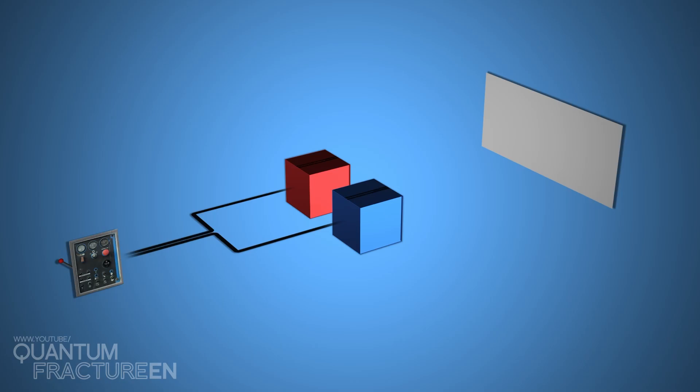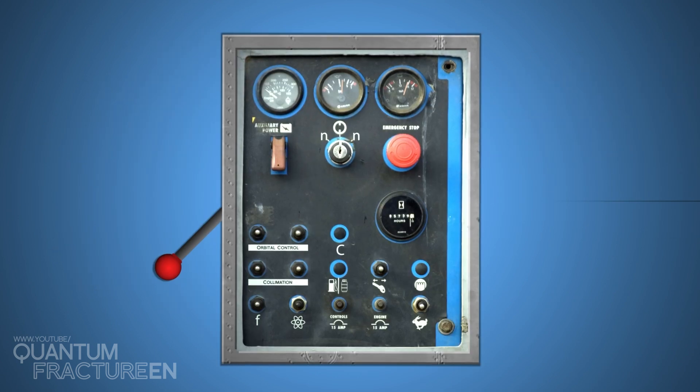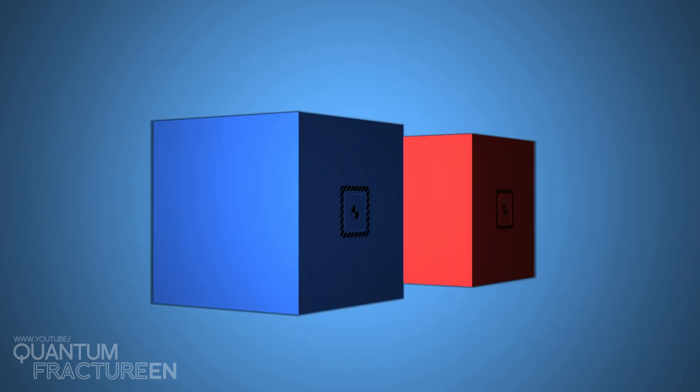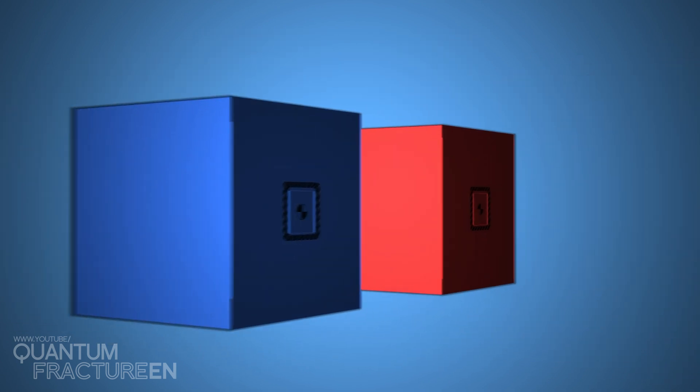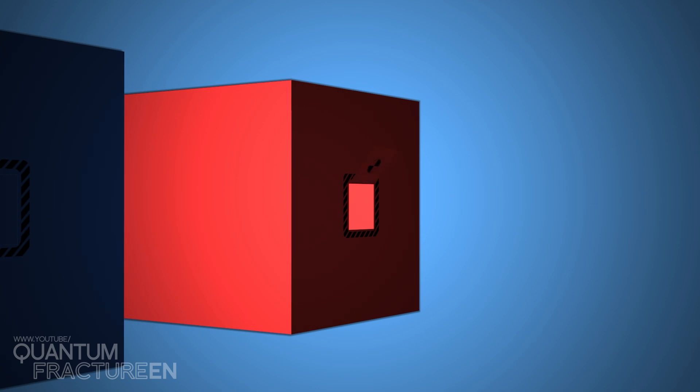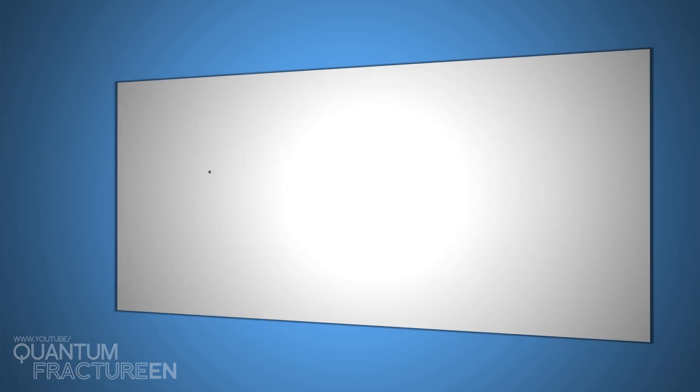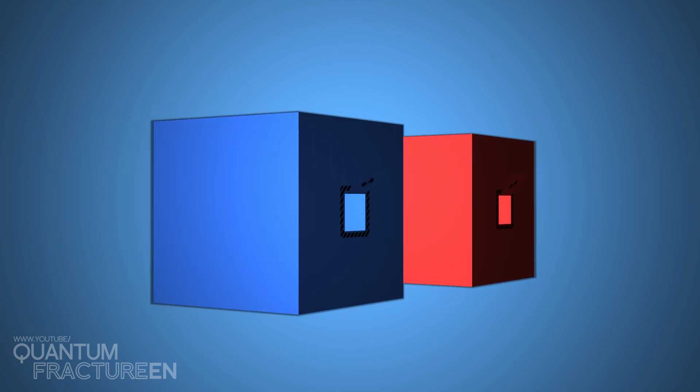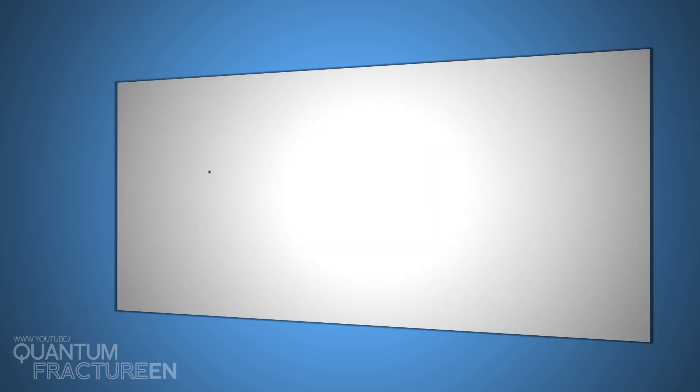Experiment number two. Let's play with the screen. We turn on the machine, and the atom is sent to one of the boxes. This time, we're going to raise the side flap on one box, say, the red one, and see what happens. Suddenly, a mark appears on the screen. We open the blue box, and… nothing happens.